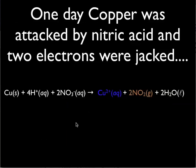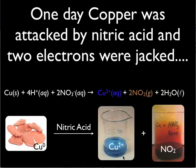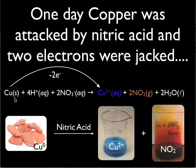We can change that situation by adding nitric acid to our copper sample. We go from this solid, shiny, lustrous metal to a solution of copper two ions, which is deep blue. We also get some brown gas evolving, due to the formation of nitrogen dioxide. What's happening is we're yanking two electrons from copper, going from neutral copper zero to copper two plus. The nitrate accepts these two electrons to become nitrogen dioxide, giving us the brown gas.